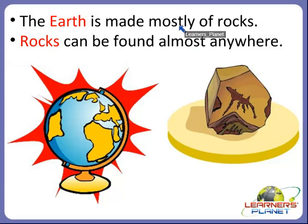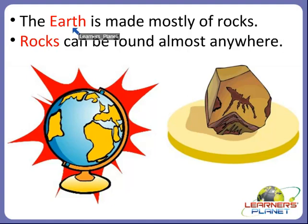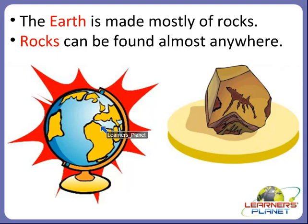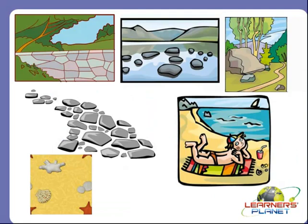The earth is made mostly of rocks. Earth is the planet in which we live, and this earth is made up of rocks. Rocks can be found almost anywhere in the world. Here we can see the picture of the earth and the rock.